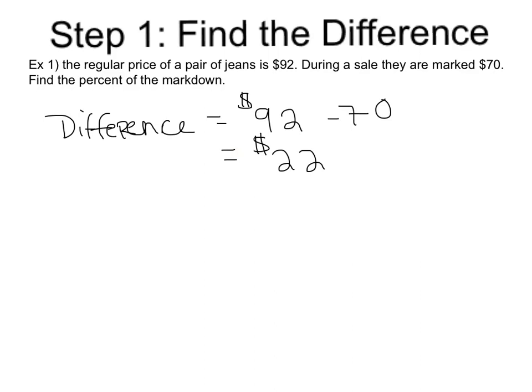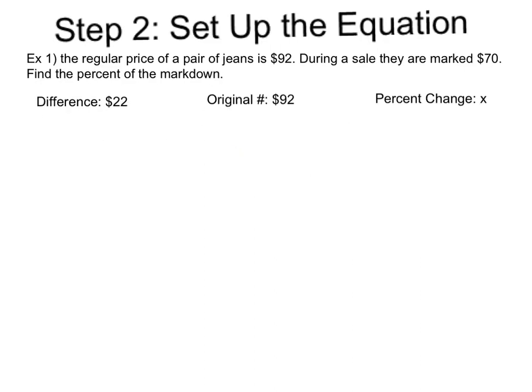Now that we have the difference, we can put our information into our percent change equation. Here's the information we know. Again, you're always going to know two of the three items. In this case, we know that the difference between the original cost and the new cost is $22. We know that the original value is $92. And the percent change is what we're looking for. That's X.